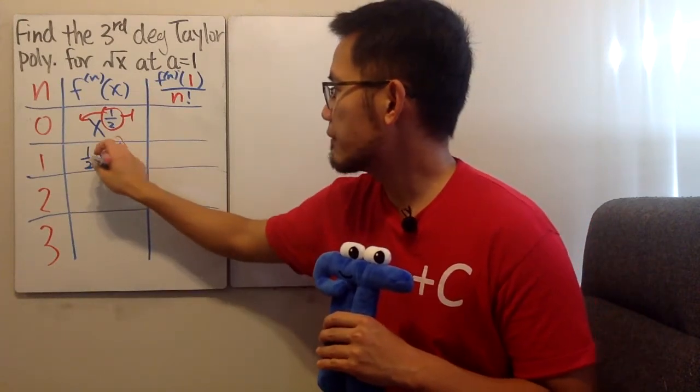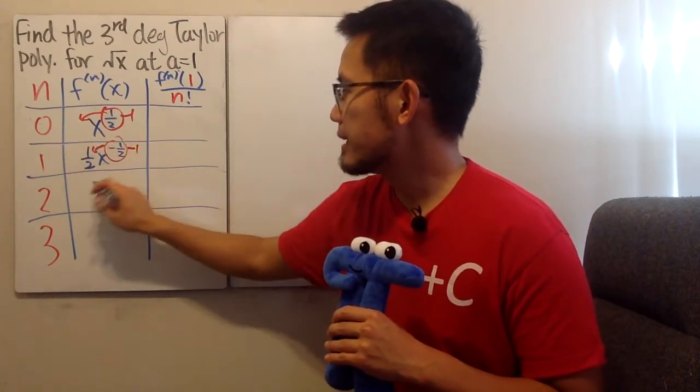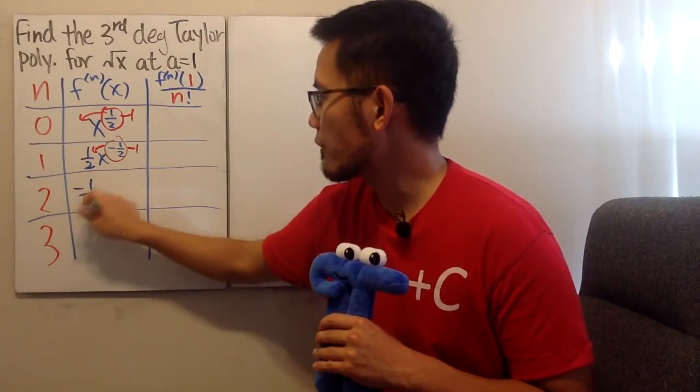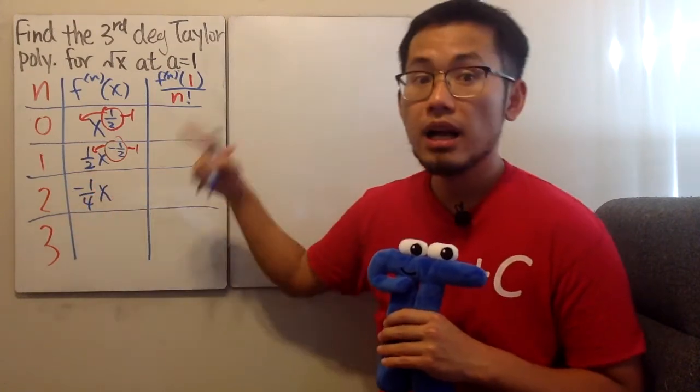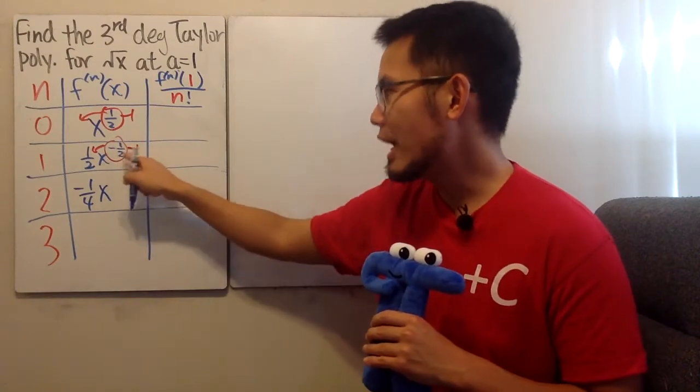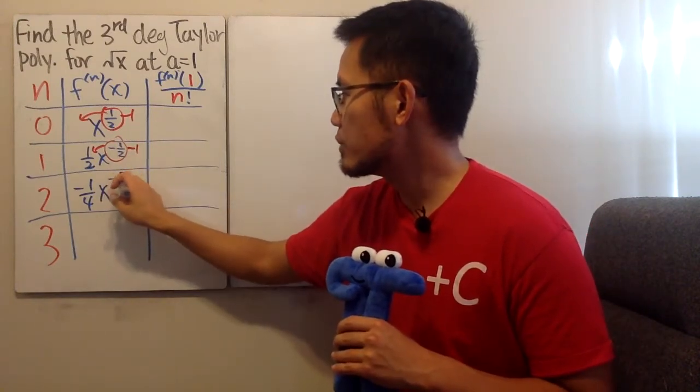Bring the negative 1 half to the front, minus 1. 1 half times negative 1 half is negative 1 over 4. And then x negative 1 half minus 1 is negative 3 half.